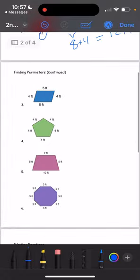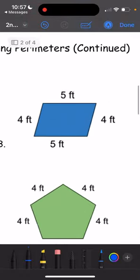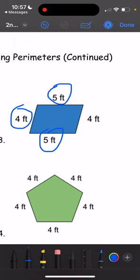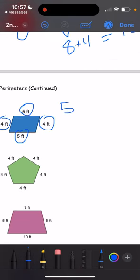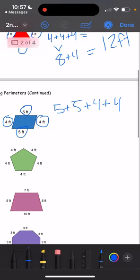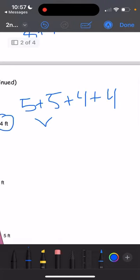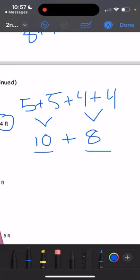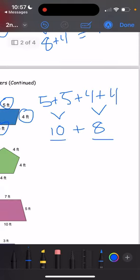Alright, let's do some over here. Let's just do number 3. We have 5 feet, 5 feet, and 4 feet, 4 feet. Now we're going to add all of them together. We have 5 plus 5 plus 4 plus 4. Let's do 5 plus 5 first. What's 5 plus 5? 5 plus 5 is 10. What is 4 plus 4? 4 plus 4 is 8. And now we're going to add these two numbers together. What is 10 plus 8? 10 plus 8 equals 18. So the answer is 18 feet.